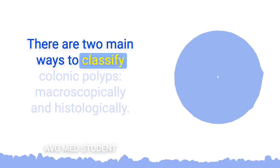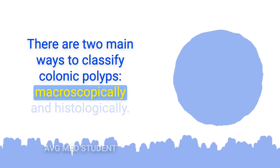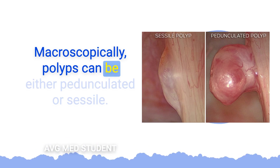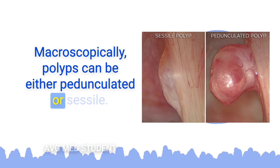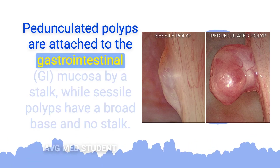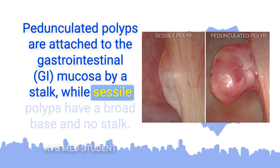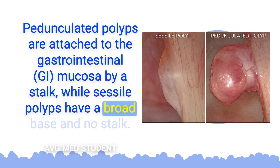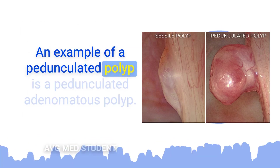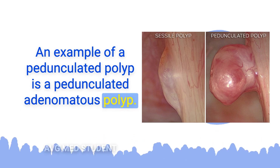There are two main ways to classify colonic polyps: macroscopically and histologically. Macroscopically, polyps can be either pedunculated or sessile. Pedunculated polyps are attached to the gastrointestinal mucosa by a stalk, while sessile polyps have a broad base and no stalk. An example of a pedunculated polyp is a pedunculated adenomatous polyp.